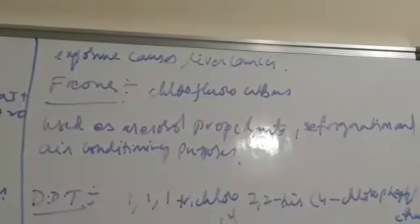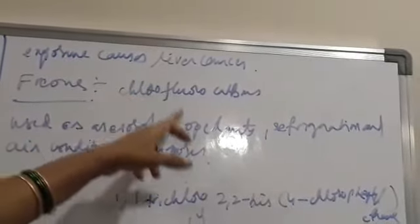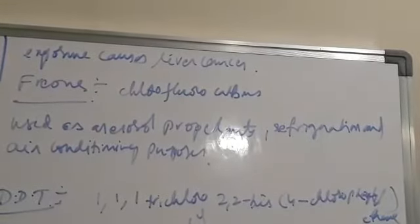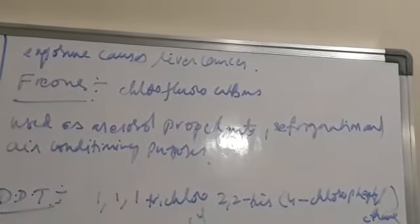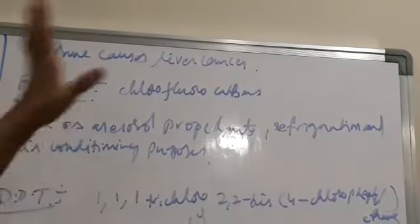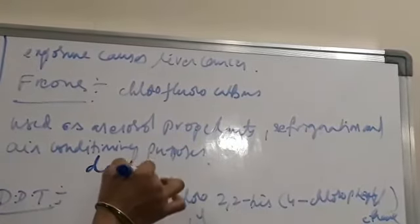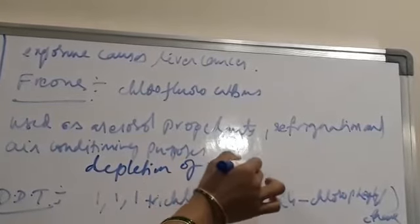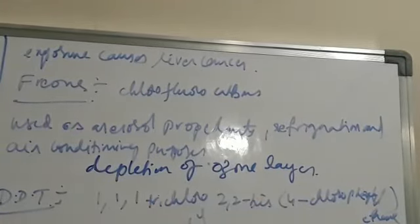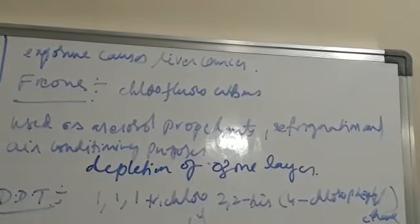Next, freons — which are chlorofluorocarbons, containing different halogen atoms such as chlorine and fluorine. Freons also come under polyhalogen compounds. They are used as aerosol propellants and for refrigeration and air conditioning purposes. However, freons cause depletion of the ozone layer. Different types of freons include freon 12 and freon 22.